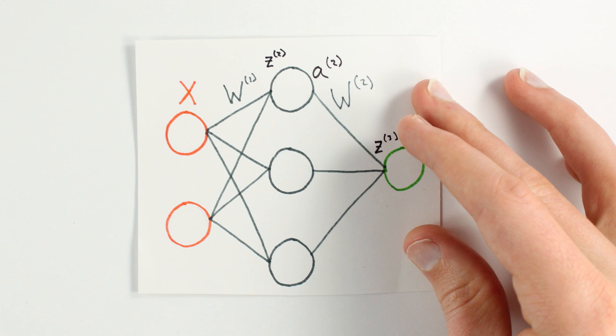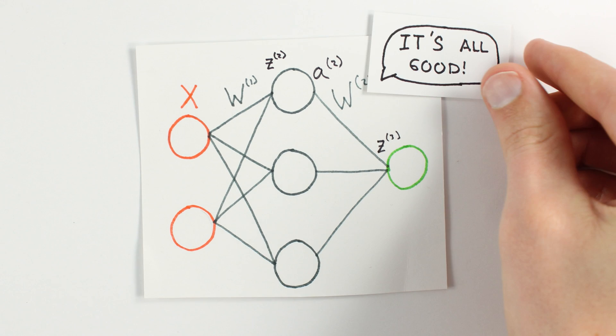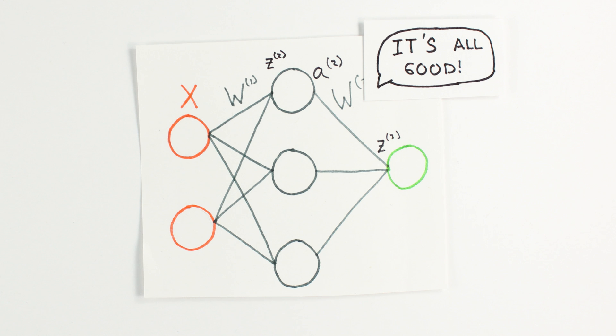What's worse is that our network doesn't have a good way to tell us that it's broken. Code with incorrectly implemented gradients may appear to be functioning just fine. This is the most nefarious kind of error when building complex systems.